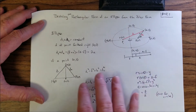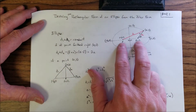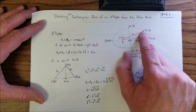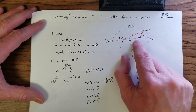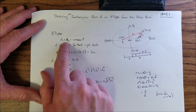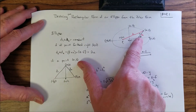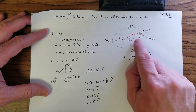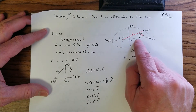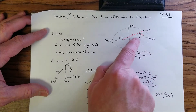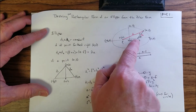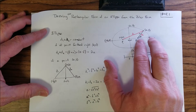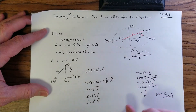First, the definition of an ellipse: we have two points here which are the foci, and the sum of the distances from one focus to a point on the ellipse to the other focus is a constant distance, labeled d1 and d2. In polar form, we pick one of the focal points as the reference, r is the distance from that focal point, and theta is the angle between that line segment and the major axis.